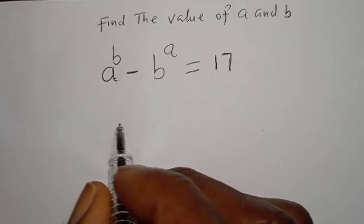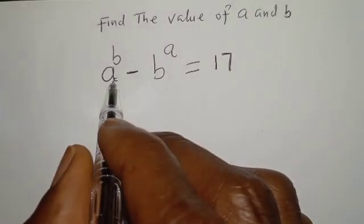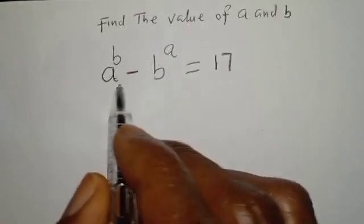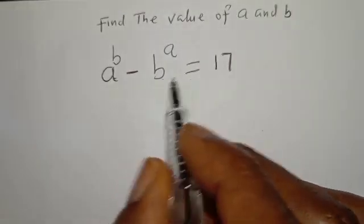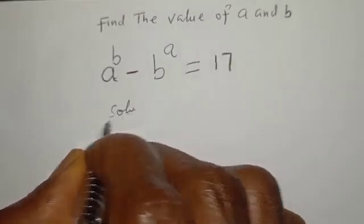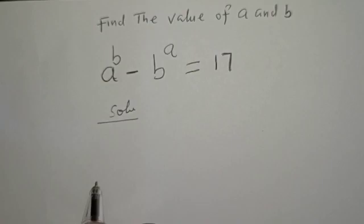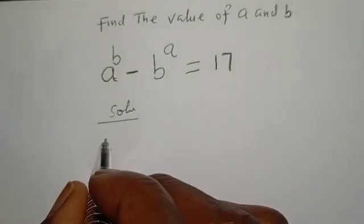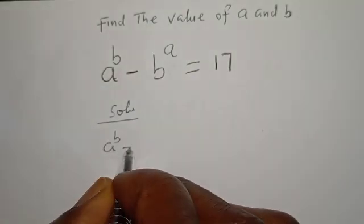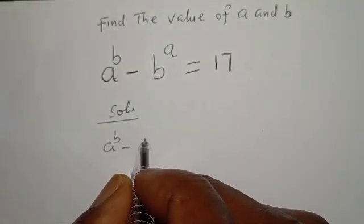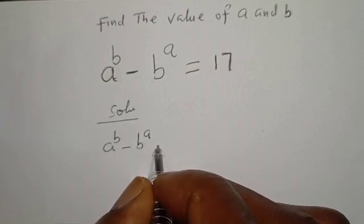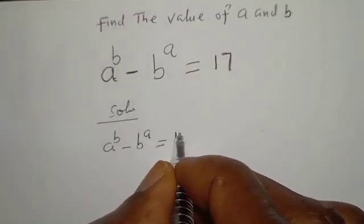Hello, welcome to Mathfocus. In this class, we want to find the value of A and B from this given Math Olympiad problem. A raised to power B minus B raised to power A is equal to 17.